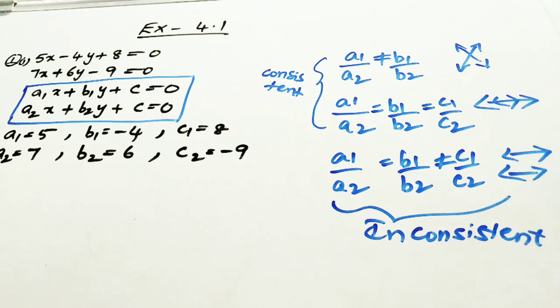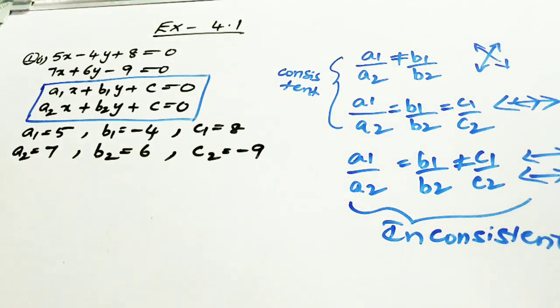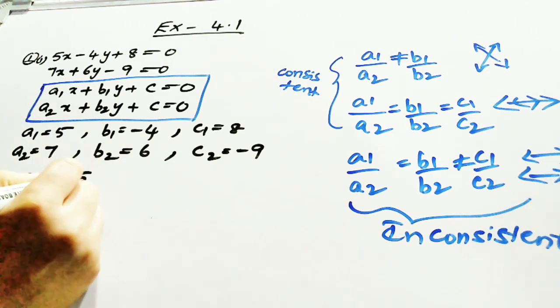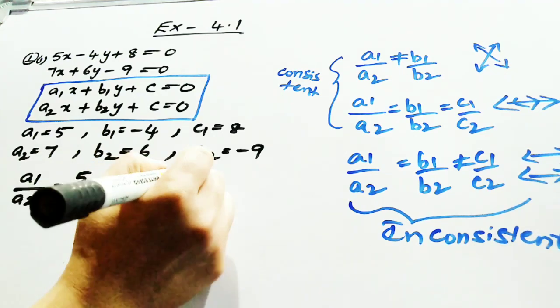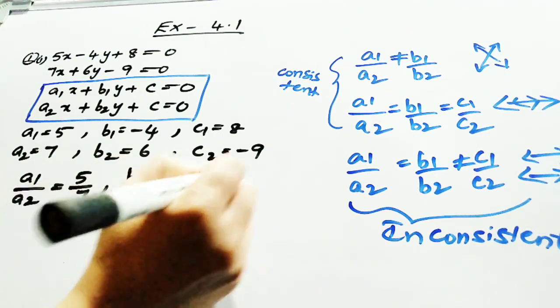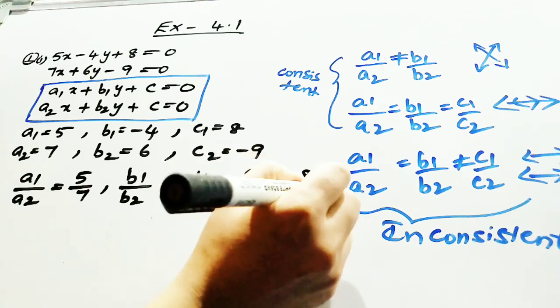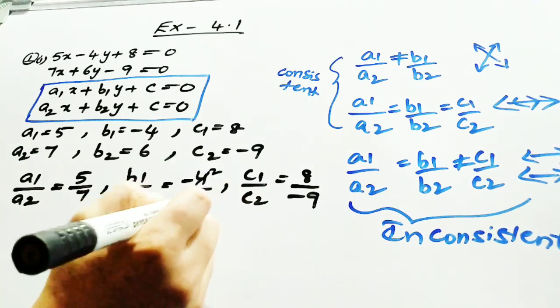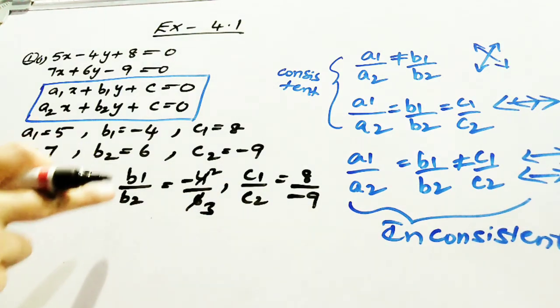Then what we have to do? You have to substitute in which form your equation will come. a1 upon a2, what is a1 upon a2? b1 upon b2 is your minus 4 by 6, c1 upon c2 is equal to 8 by minus 9. Just consider that a1 upon a2, b1 upon b2.